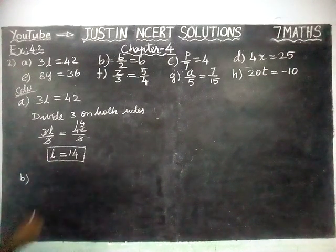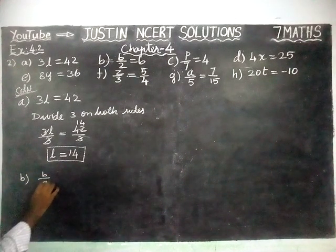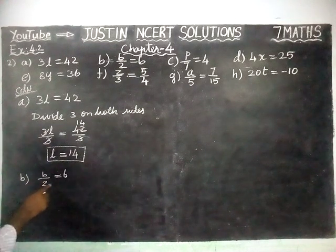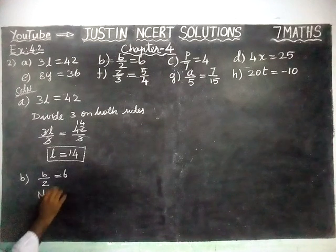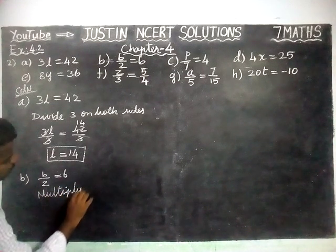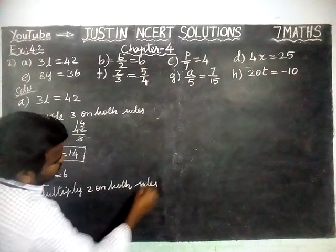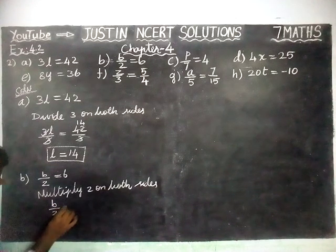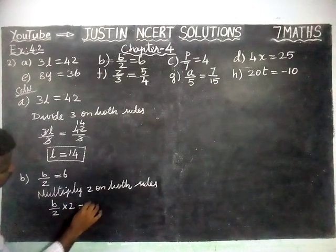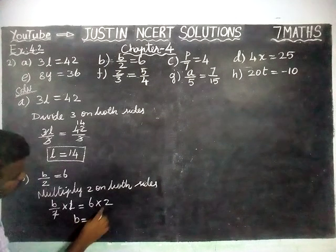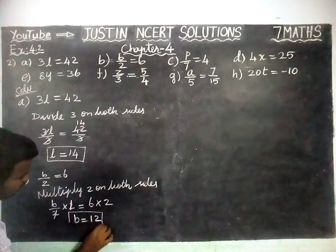Next, part B. B divided by 2 is equal to 6. Here, the number 2 is in the denominator. So we are going to multiply 2 on both sides. P divided by 2, multiplied by 2, is equal to 6 into 2. The 2s get cancelled. So B is equal to 12. The value of B is equal to 12.